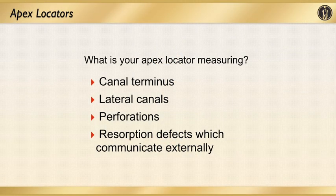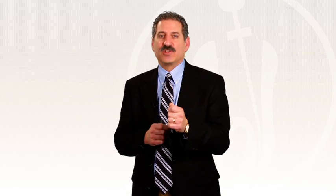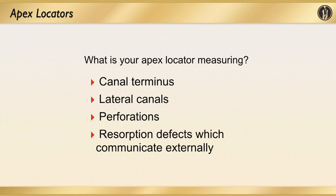When using an apex locator, you need to understand what your apex locator is measuring. Obviously, we want to know where the canal terminus is — whether that's the major diameter or the minor diameter. You want to find the canal terminus; that's our ultimate goal. When using the apex locator, you'll find that where there are lateral canals, there's vital or necrotic tissue in those areas with an exchange of fluids. You may hit a spot where you get a reading where a lateral canal is. As you file the case a little bit larger, you'll get past that point and be able to determine whether it is a lateral canal or the canal terminus.